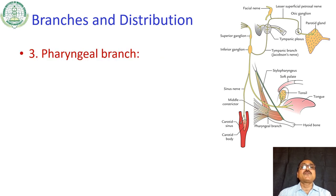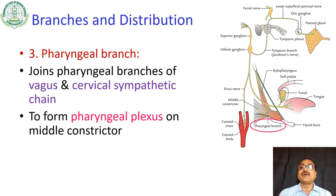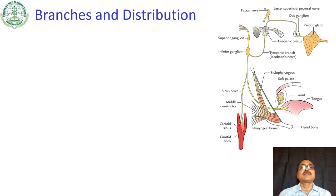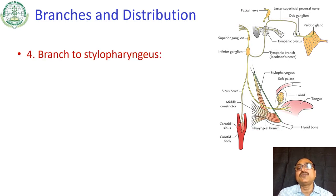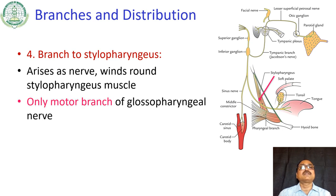The third branch is the pharyngeal branch. This branch joins branches of the vagus and cervical sympathetic chain to form the pharyngeal plexus, which supplies the pharynx. The fourth branch is the branch to the stylopharyngeus muscle. It arises as the nerve winds around the stylopharyngeus, and is considered the only motor branch of the glossopharyngeal nerve.